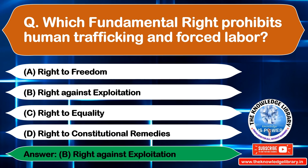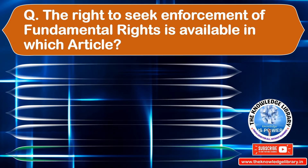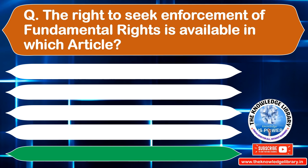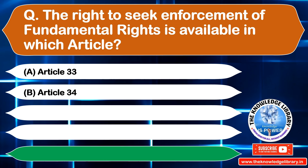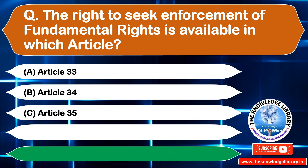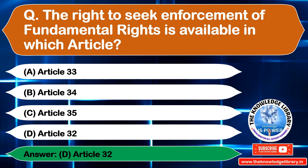The next question is: the right to seek enforcement of fundamental rights is available under which article? Option A: Article 33, Option B: Article 34, Option C: Article 35, Option D: Article 32. The correct answer is Option D: Article 32.